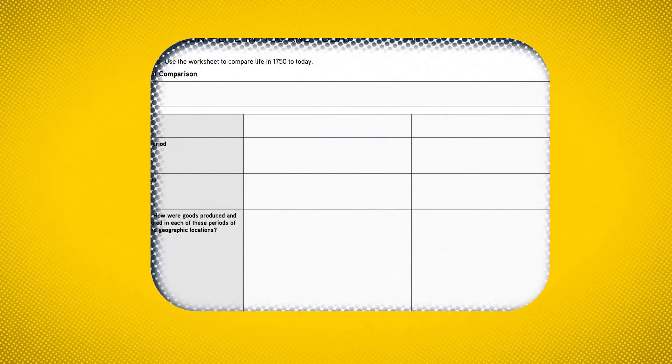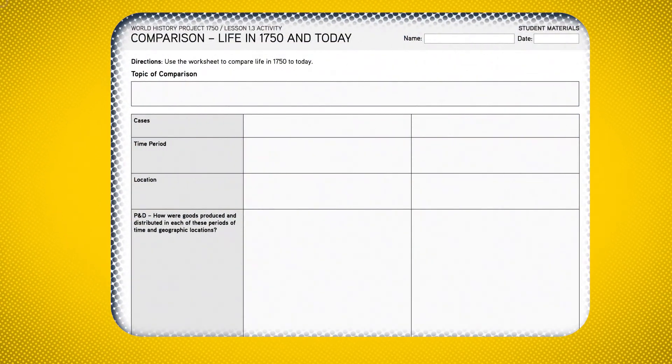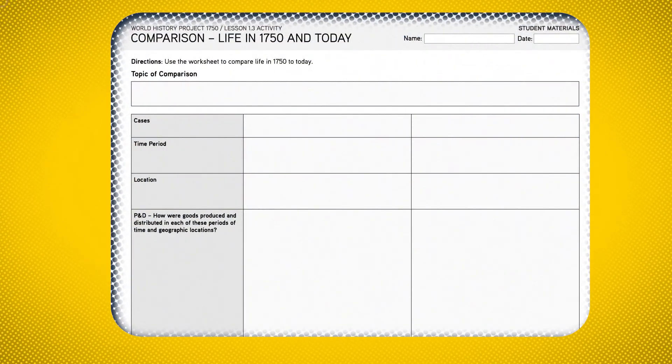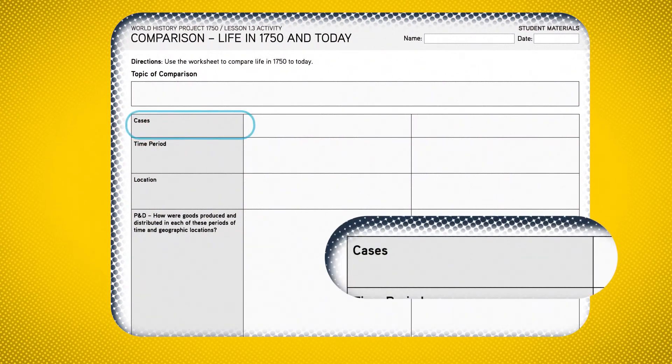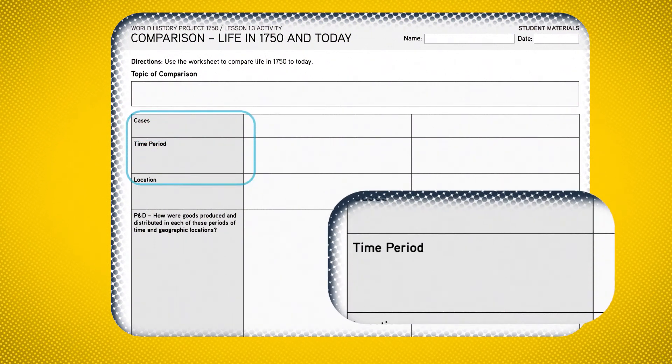The possibilities are endless. After you've chosen your topic of comparison, students will write in the cases they are comparing and note their time period and location. For example, our introductory comparison activity in the course has students compare the world today to the world in 1750.